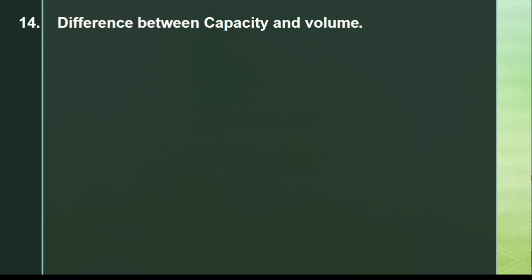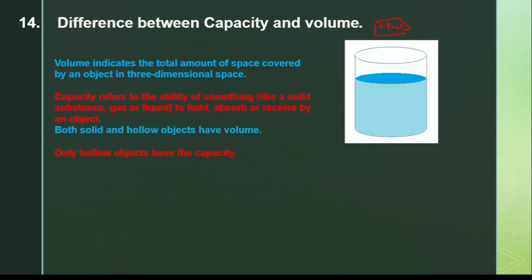Next question: what is the difference between capacity and volume? This is a Class 8 question. Volume indicates the total amount of space covered by an object in three-dimensional space. Capacity refers to the ability of something — solid, gas, or liquid — to hold, absorb, or receive. Both solid and hollow objects have volume, but only hollow objects have capacity.